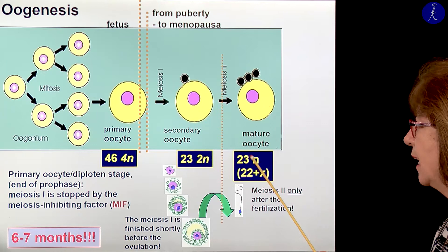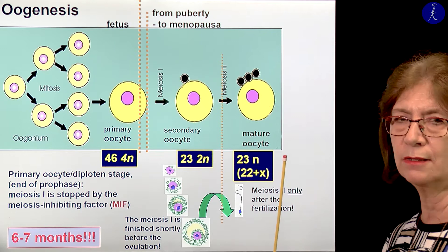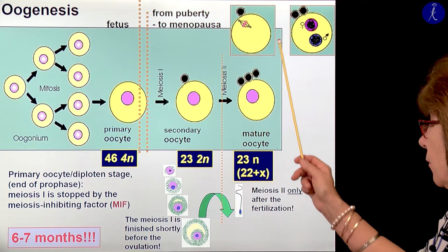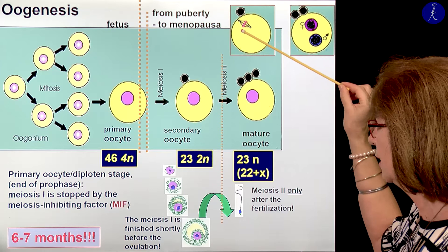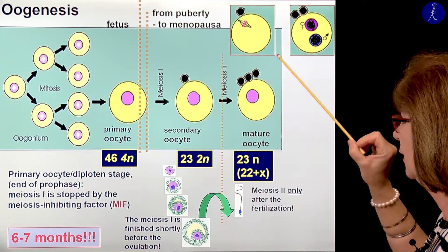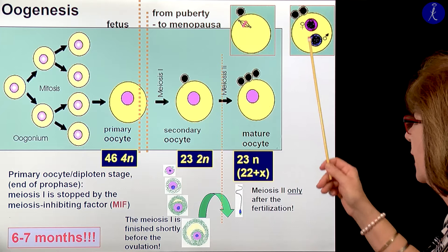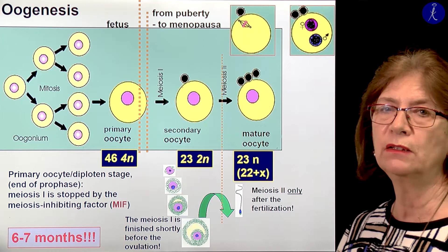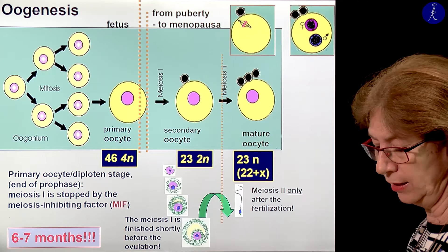The mature oocyte, after extrusion of the second polocyte, has 23 chromosomes — 22 somatic chromosomes and one sex chromosome, which is an X. But as I told you, this cell is already fertilized. The fertilization happens in the state when the second meiotic division has already started and there is the division spindle, which goes through only upon fertilization. Two pronuclei then form — a female and a male pronucleus, each with 23 chromosomes. They do not unite yet. This is a fertilized oocyte with the genetic material of the sperm cell.